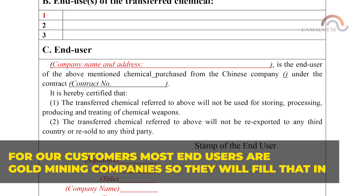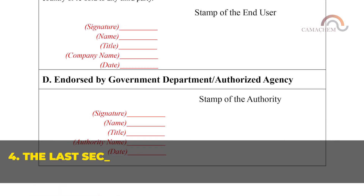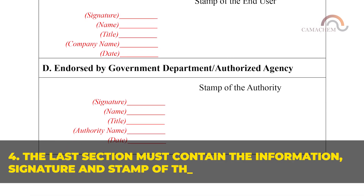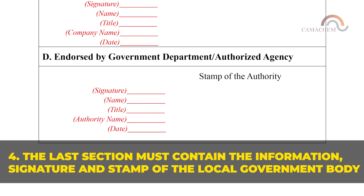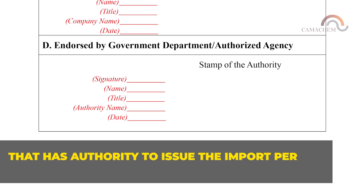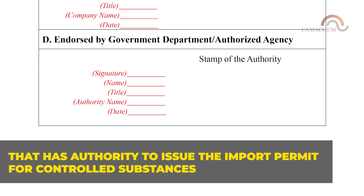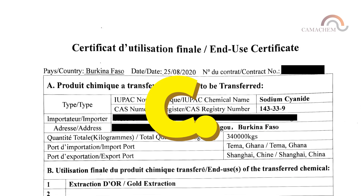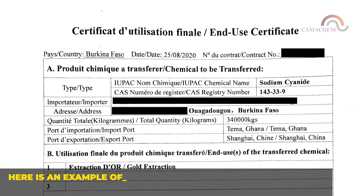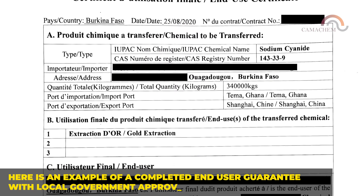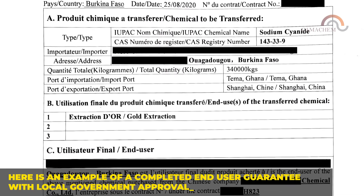Four, the last section must contain the information, signature, and stamp of the local government body that has authority to issue the import permit for controlled substances. Here is an example of a completed end user guarantee with local government approval.